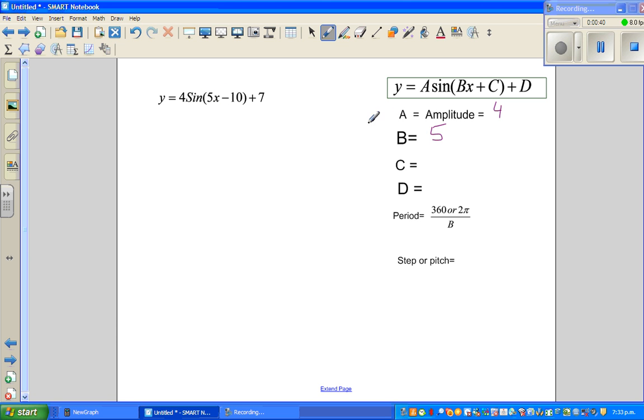So let me write b. What is c? C is negative 10 and d is 7. Now this d tells you the baseline. So this will be your baseline.